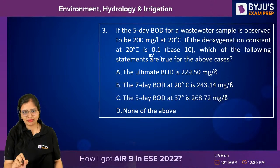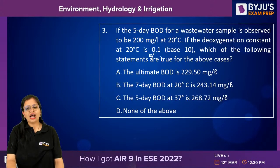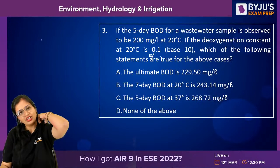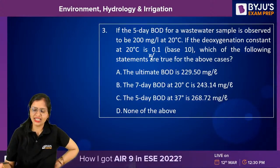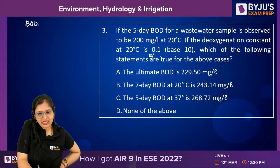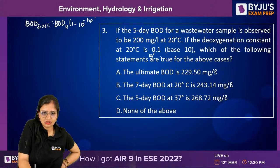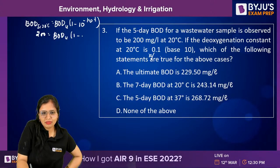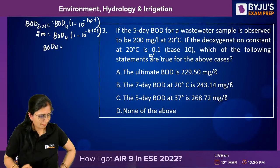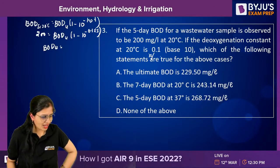Next is an MCQ regarding BOD. Five-day BOD is given; you have to calculate seven-day BOD — temperature change is also given. This type of question appears every year in exams so be very cautious. Five-day BOD at 20°C is 200 mg/L (base 10 formula). First calculate ultimate BOD: BOD_ult = BOD₅ / (1 − 10^(−k × 5)) = 200 / (1 − 10^(−0.185)).